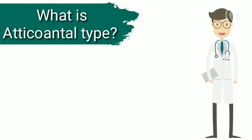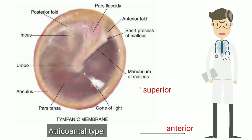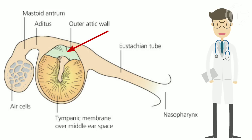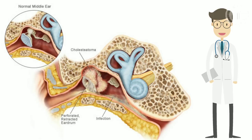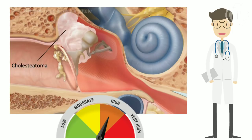Now come to the atticoantral type of Chronic Suppurative Otitis Media. It involves the posterior superior part of the middle ear cleft — in other words, the attic, antrum, and mastoid — and is associated with attic or marginal perforation of the ear drum. The disease is often associated with a bone-eroding process such as cholesteatoma. Risk of complication is very high in this case.